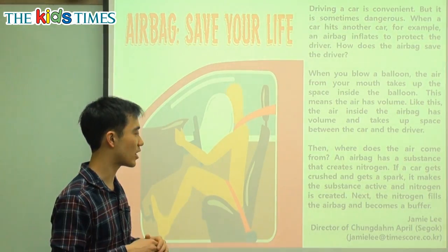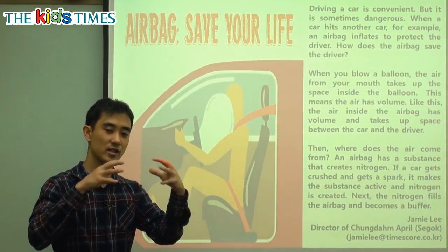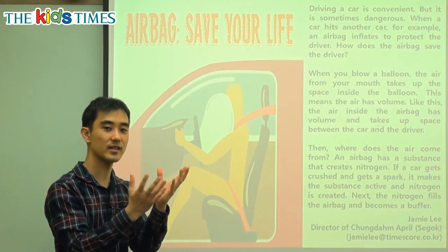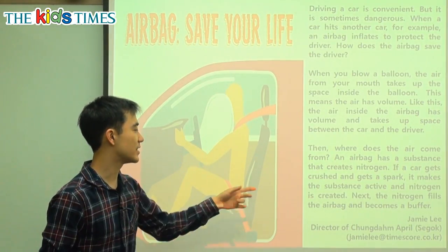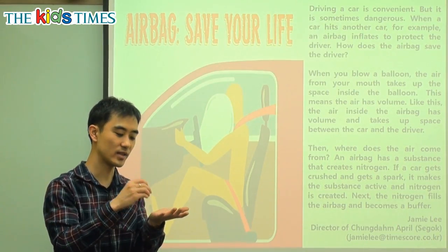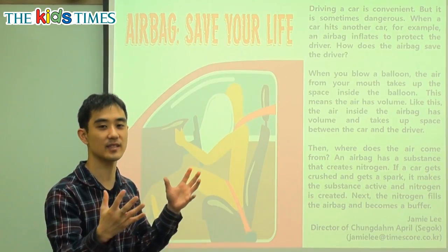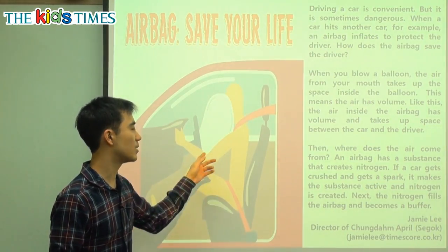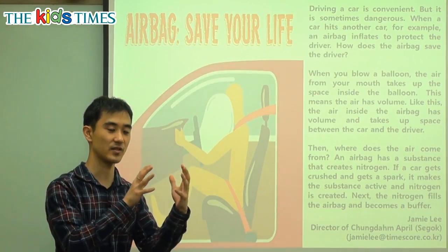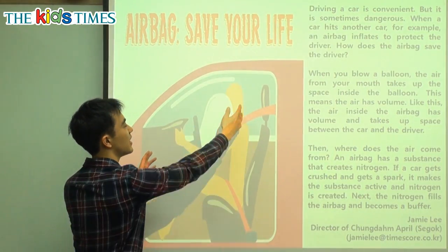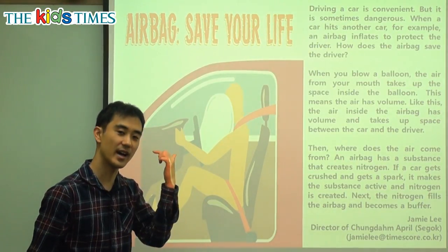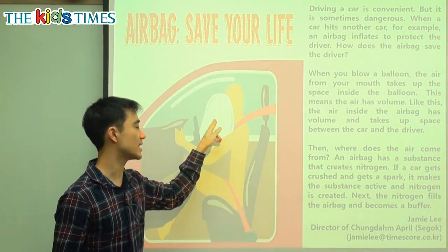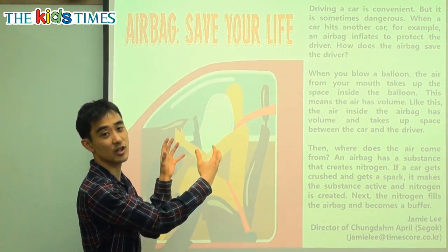If a car gets crushed and gets a spark — so there's an accident — it makes the substance active. It activates and nitrogen is created. Once there's a spark, it goes up and makes nitrogen. The nitrogen fills the airbag and becomes a buffer, which is like a protection. The airbag is between the steering wheel and your head — if your head hits the steering wheel it's very dangerous, but the nitrogen gas inside acts as a buffer, like a cushion. It blocks it.